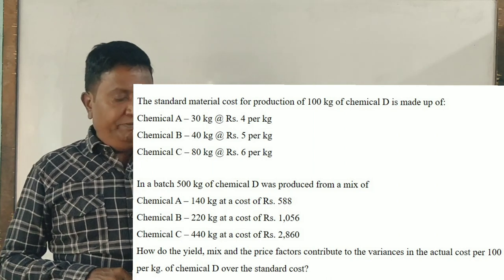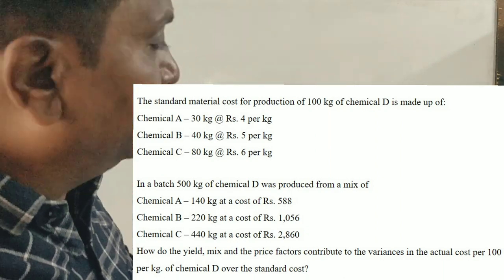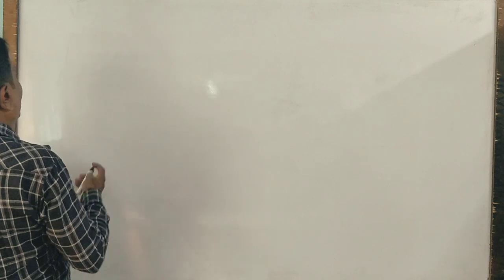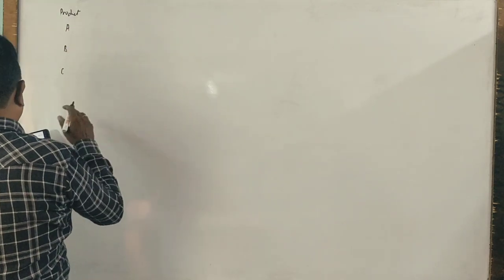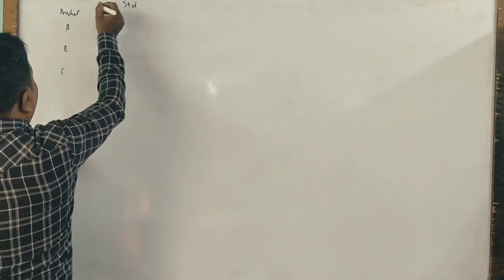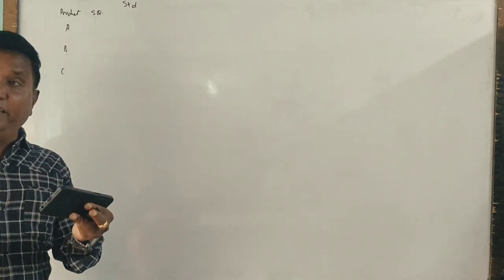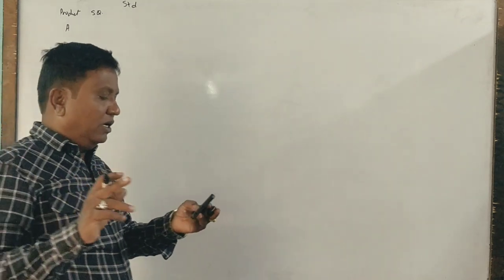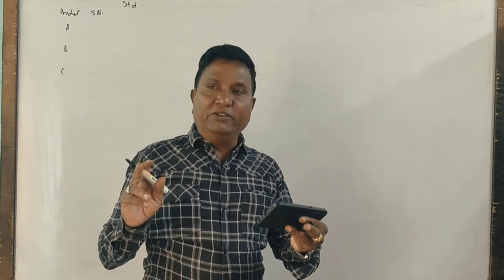Let's put it in a table format. We have to start with the table - what is the table given to us? First, products A, B, and C. Standard quantity - what is given is for standard 100 kg output. Actual gas produced is 500 kg.